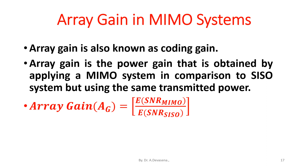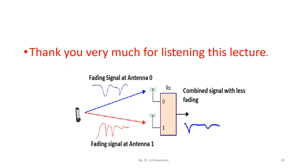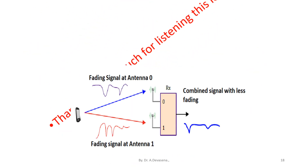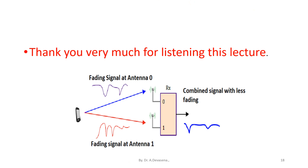Here SISO represents single input single output and MIMO represents multiple input multiple output. Thank you very much for listening to this lecture. If you like this lecture, kindly share this video with your friends. For further updates, kindly subscribe to my channel. Thank you.